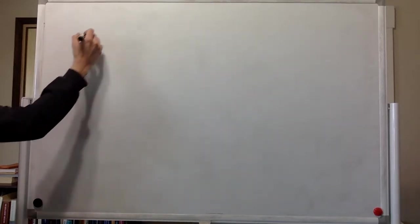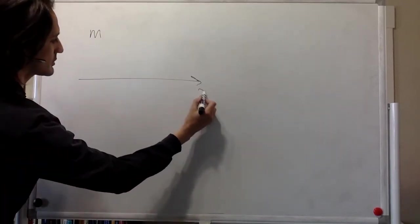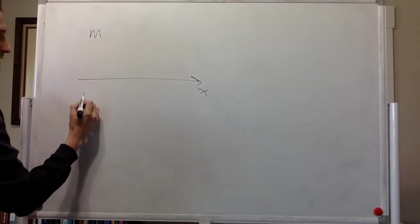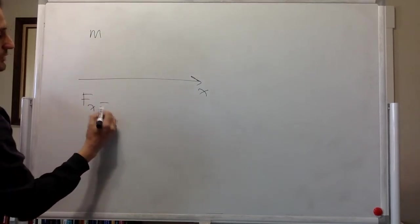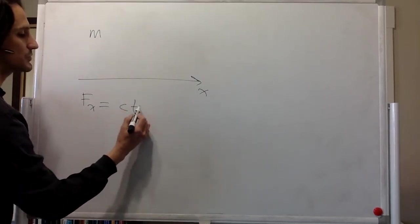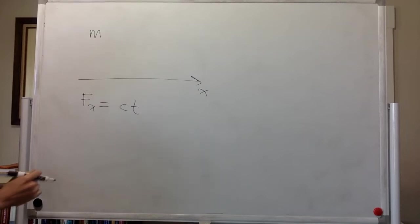We have a particle. The mass of the particle is m. And it's moving in one direction, so just along the x-axis. And the net force that it experiences is ct, where t is time and c is a constant.